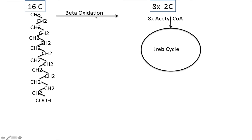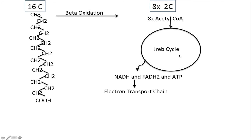With beta oxidation occurring on a 16-carbon fatty acid, you get products. You may get questions asking about the products from a certain carbon-length fatty acid — like 16 or 18 carbons. What we get is acetyl-CoA, and we get eight of them from a 16-carbon chain. You simply divide the carbon chain in half to get the number of acetyl-CoAs. That acetyl-CoA is then fed into the Krebs cycle, whose energy products are NADH, FADH2, and ATP. The electrons from those then get kicked into the electron transport chain.